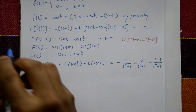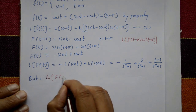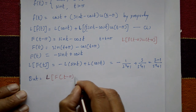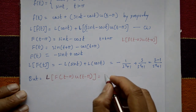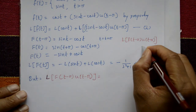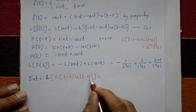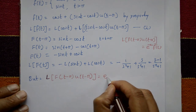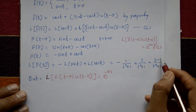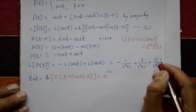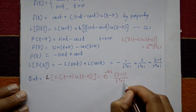By the second shifting theorem: L{f(t − π) · u(t − π)} = e^(−πs) · F̄(s). Here a = π, so this equals e^(−πs) · (s − 1)/(s² + 1).